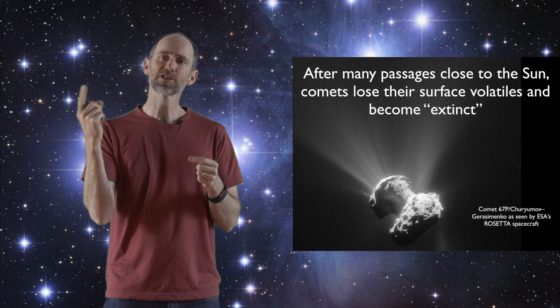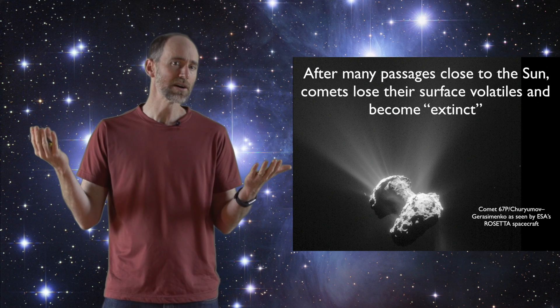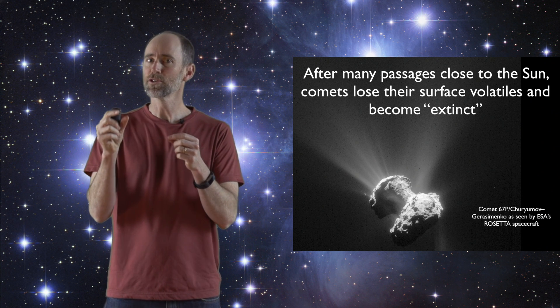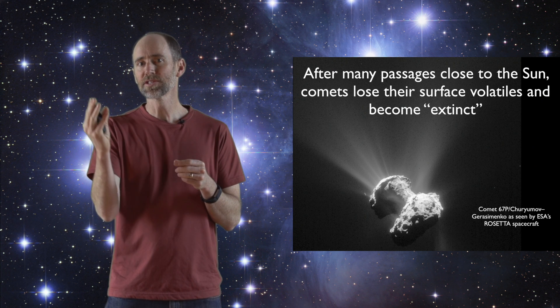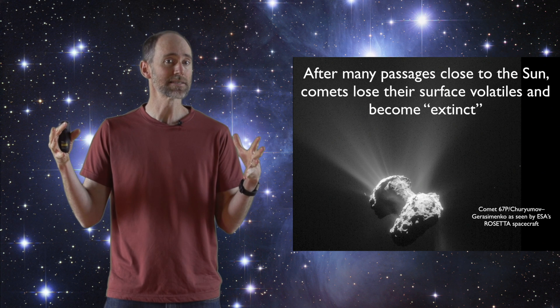Instead, they still pass close to their star a few times, ten times, a hundred times, a thousand times. Most of those pieces pass close to their star enough times that they should actually lose their surface volatiles and become extinct.